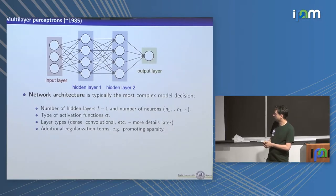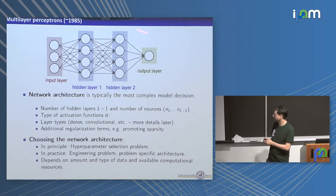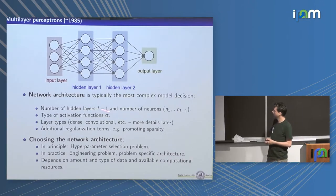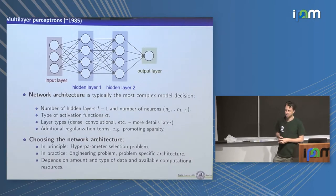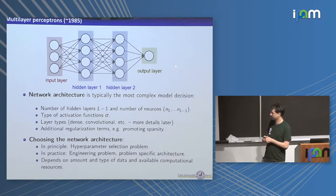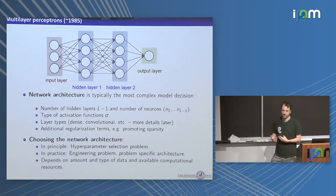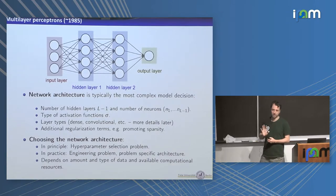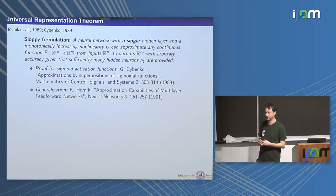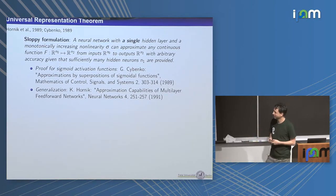A big issue is choosing the network architecture: how many layers, how wide, what activation functions. This is a hyperparameter optimization problem — in principle we choose them by optimizing the validation score and evaluate on the test score. In practice this is very expensive for neural networks because you have to train for each point in hyperparameter space. A lot of intuition and domain knowledge goes into choosing which hyperparameters to explore.